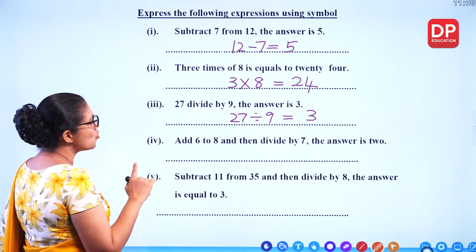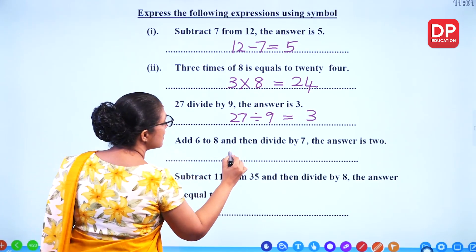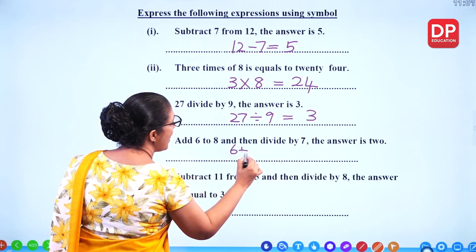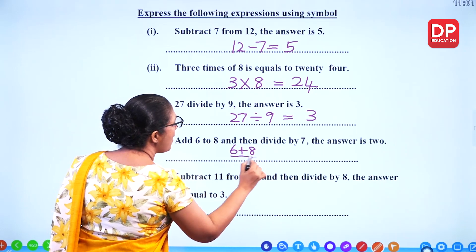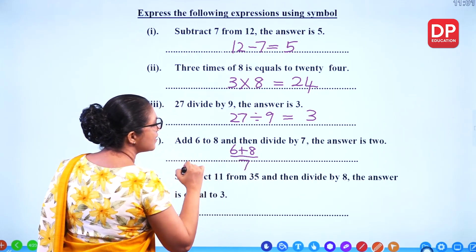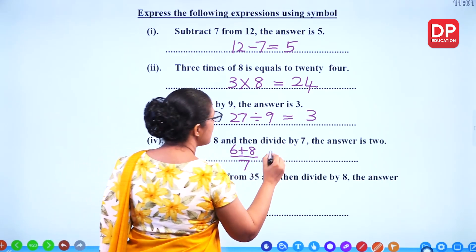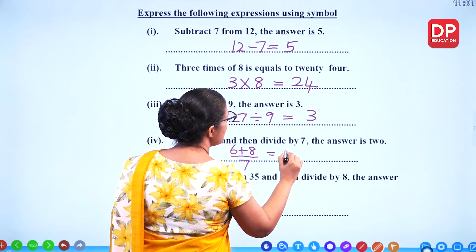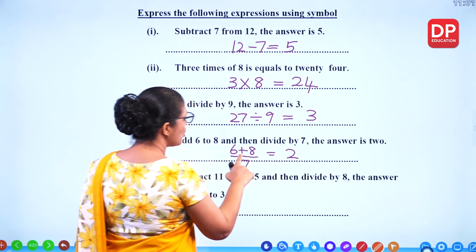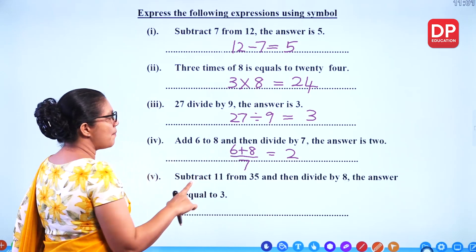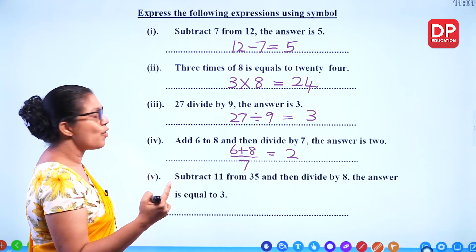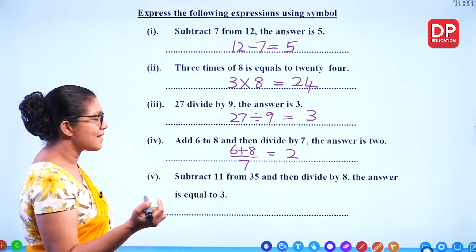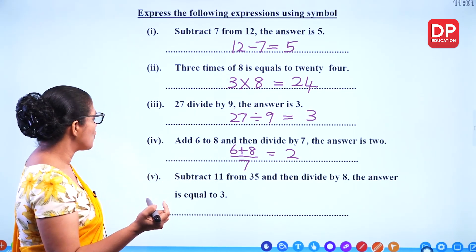Add 6 to 8, then divide by 7. Answer is 2. Let's check that: 8 plus 6 is 14, and 14 divided by 7 is 2. Correct.